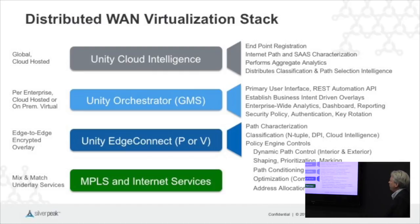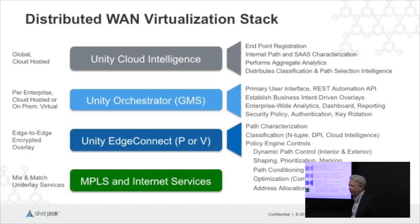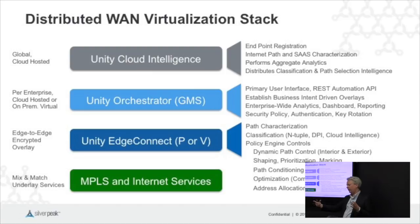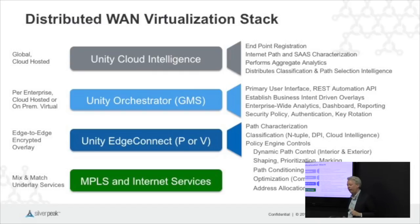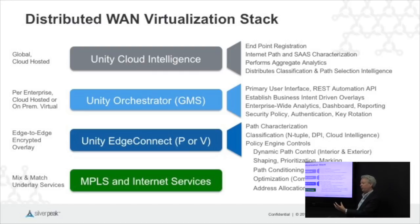Another important piece that Rolf will talk more about is establishing business intent overlays. There's the idea of building a virtual WAN — you can think of it as singular, but sometimes it's helpful to think of separate overlays. For example, an overlay for voice, an overlay for PCI critical credit card data, an overlay for replication, and another generic overlay. Each may have different quality of service requirements and different topologies — some meshed, others hub and spoke where you bring everything through centralized or regionalized firewalls.